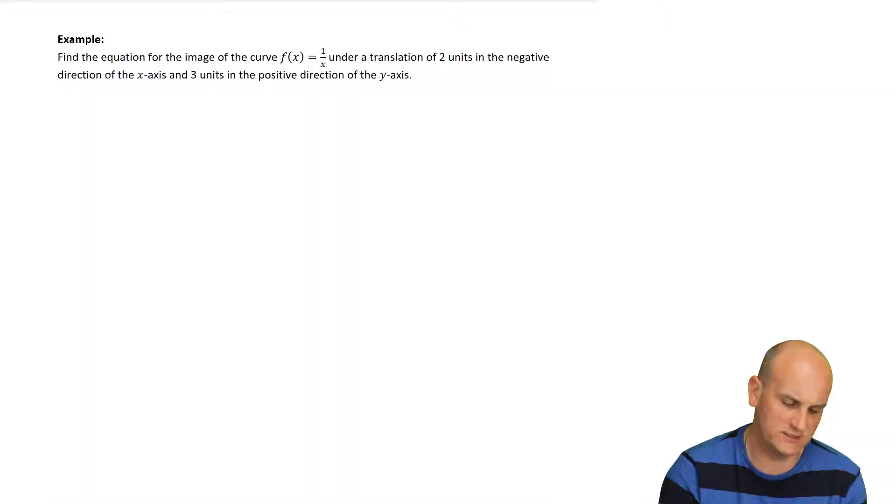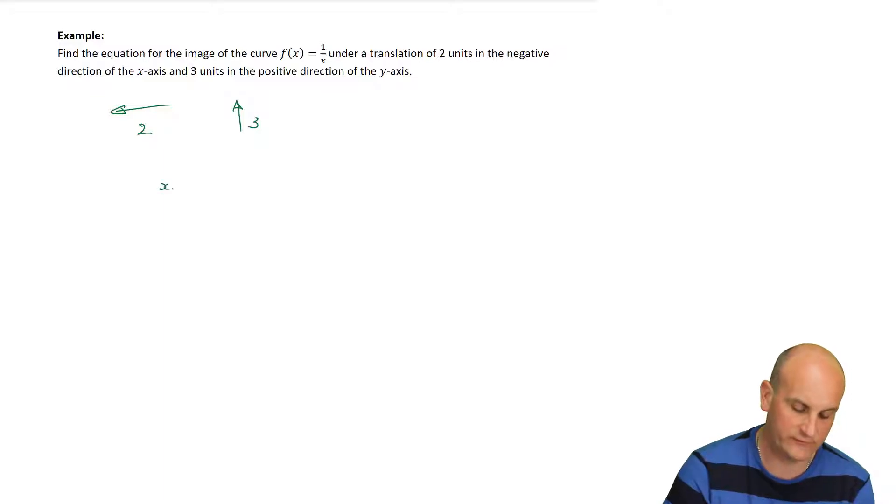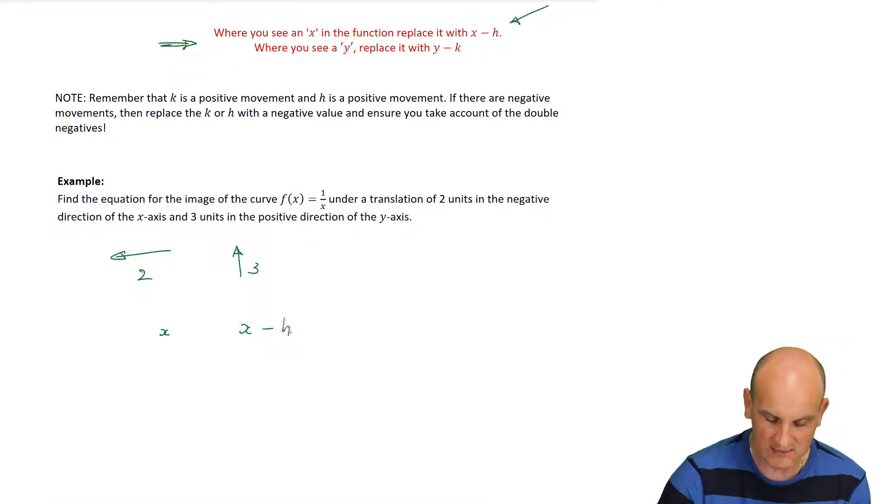So, here's an example. Find the equation of the image of the curve, function of x equals 1 over x. Under a translation of 2 units in the negative direction of the x-axis. I want to go 2 units that way, and 3 units in the positive direction of the y-axis. So, what we now know, so let's put a 3 there. So, what we now know is when I had an x, I'm now going to replace that with x minus, let's just check, make sure I've got the right letters, x minus h. Now, because we're moving 2 units in the negative direction, I'm going to replace x with x minus, minus 2, or x plus 2.